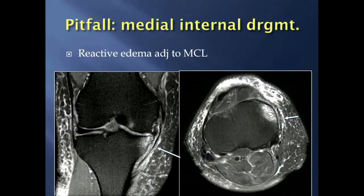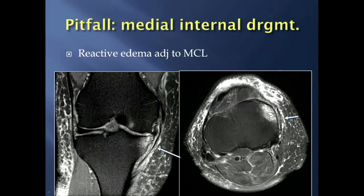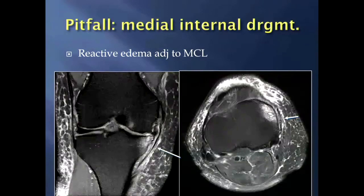There's a pitfall when evaluating the MCL: medial joint internal derangement. If somebody has a meniscal tear or bad osteoarthritis on the medial side of the knee, that can produce edema around the medial collateral ligament that mimics an MCL sprain. In this patient's case, they did not have any acute injury, and so this is all reactive edema in the setting of medial compartment internal derangement.